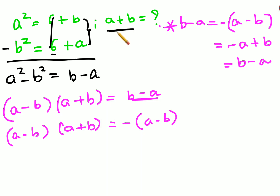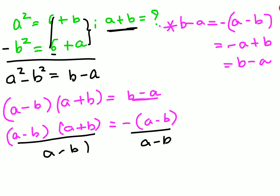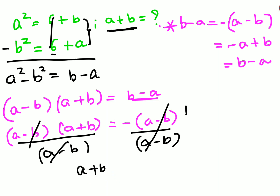Since I want to find a plus b, I will divide both sides by a minus b. This and this will cancel, and this and this will also cancel, giving you one. So you get a plus b equals negative one. Please remember there is a negative value involved — it is not just one, it is negative one. I hope this is very clear to everyone. That's it for today, I will see you in the next video.